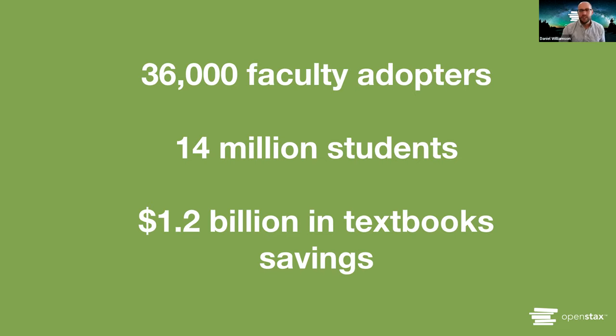We have about 36,000 faculty adopters currently using OpenStax freely available textbooks. Over the course of now going on nearly nine years — almost a decade — we have served 14 million students. That has translated to $1.2 billion in student savings that would have otherwise been spent on textbooks. This is all thanks to the hard work you all have done to advocate for lower costs and find freely available open source materials.